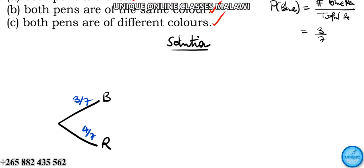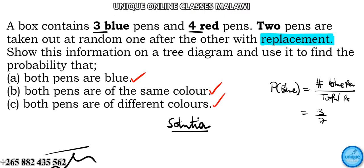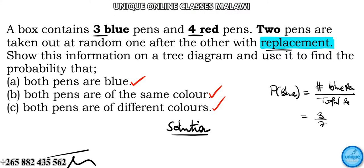These branches here, I'm putting 4 over 7. It's the same - if I pick red, it's 4 over 7. And blue would be 3 over 7.